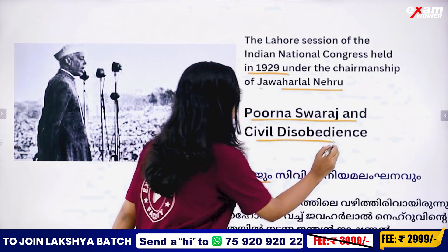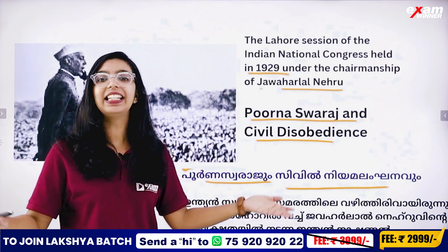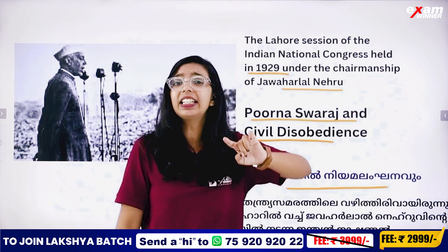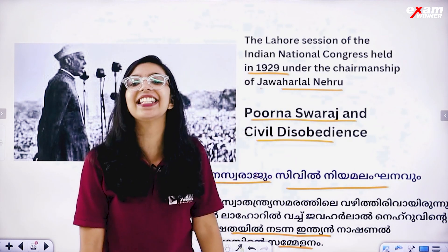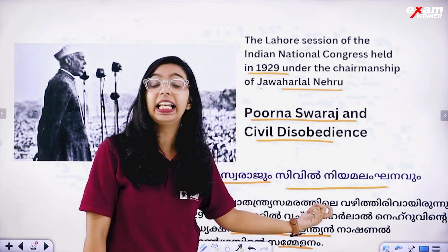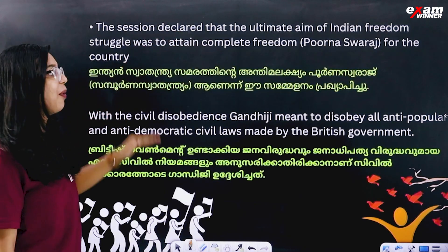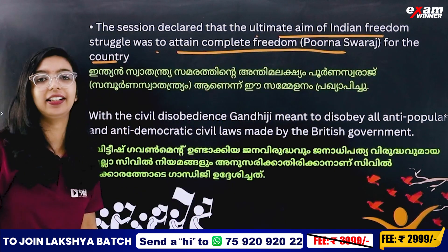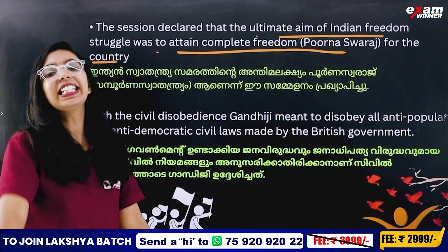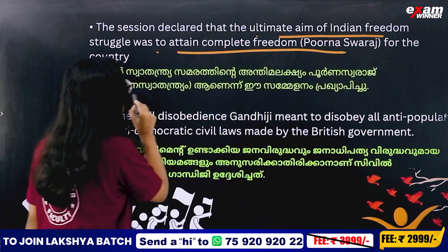Civil disobedience. The session declared that the ultimate aim of Indian freedom struggle was to attain complete freedom — Poorna Swaraj for the country. That is why we were struggling. The ultimate aim of the Indian freedom struggle was complete freedom, Poorna Swaraj.